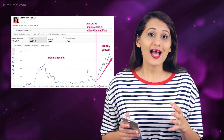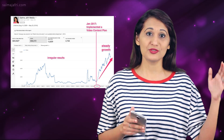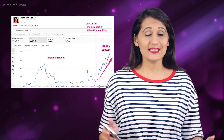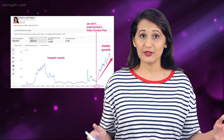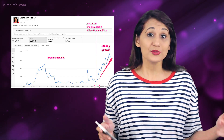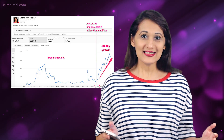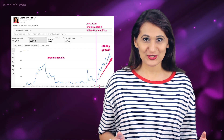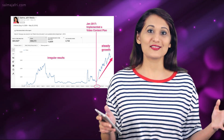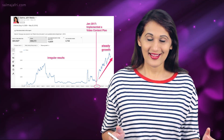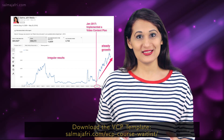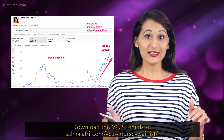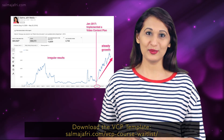That is exactly what happened to my channel between 2009 and the end of 2016 — I had very irregular results and my video production was very sporadic. So in 2017 I created a simple Google spreadsheet that formed the basis of my video content plan. You can download this template for free — the link is in the description below.